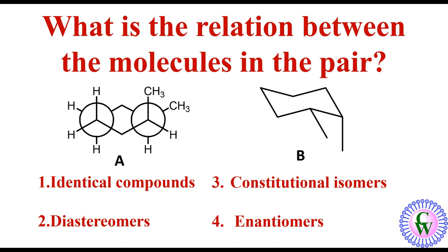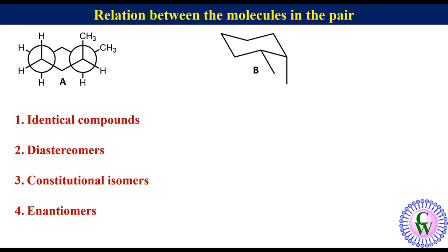Here we have to determine whether the given pair of compounds are identical, constitutional isomers, enantiomers, or diastereomers. Let's solve this problem.